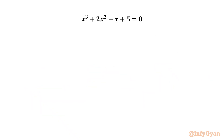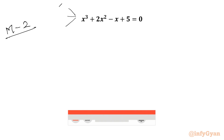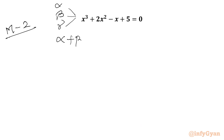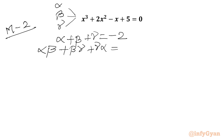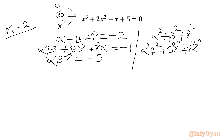Now we will consider method 2, using Vieta's formulas. From the cubic equation, if the roots are alpha, beta, and gamma, then: sum of roots alpha plus beta plus gamma equals minus b over a, so minus 2; sum of roots taken two at a time, alpha beta plus beta gamma plus gamma alpha equals c over a, so minus 1; and product of roots alpha beta gamma equals minus d over a, so minus 5. We need to calculate alpha² plus beta² plus gamma², then alpha²beta² plus beta²gamma² plus gamma²alpha², and finally alpha²beta²gamma².